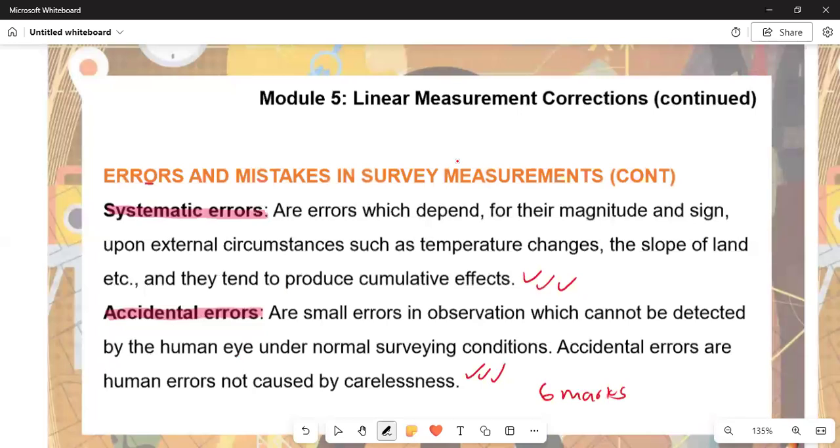Systematic errors are errors which depend, for their magnitude and sign, upon external circumstances such as temperature changes, the slope of the land, and other effects.